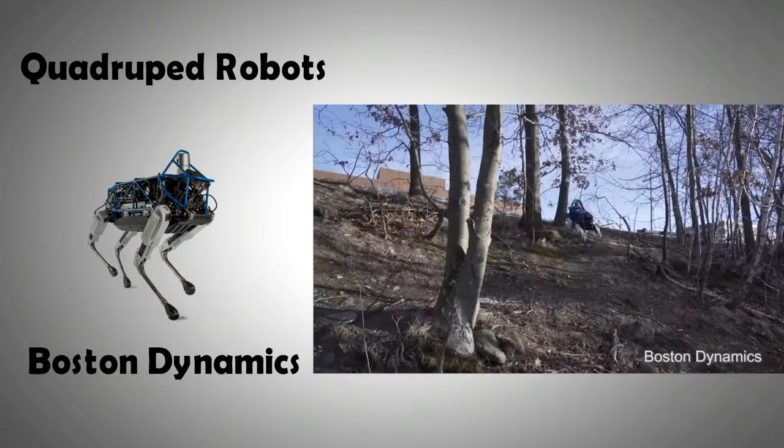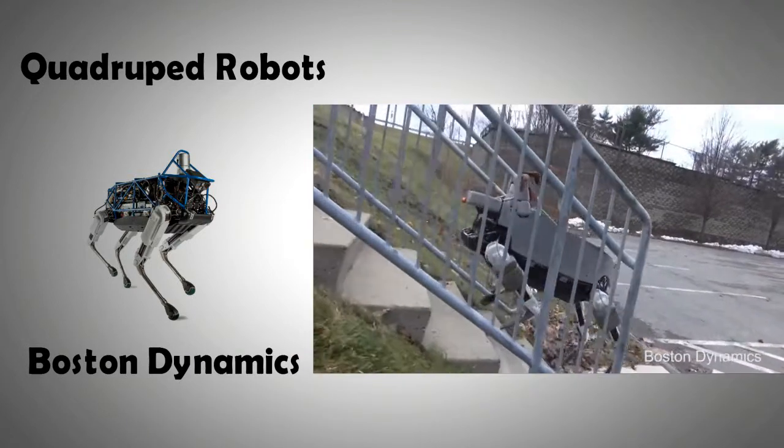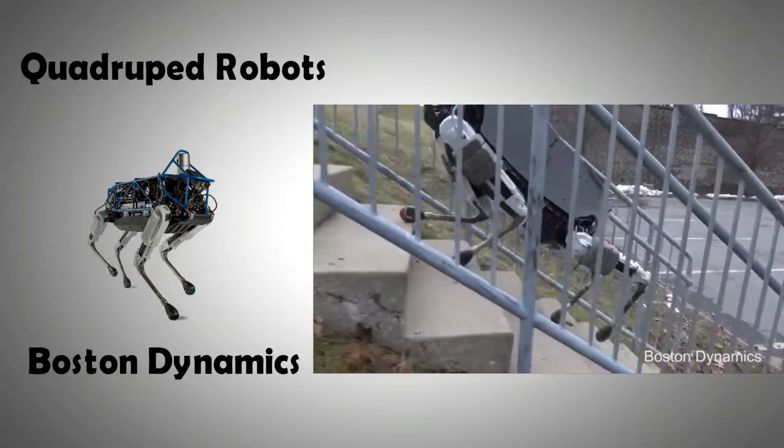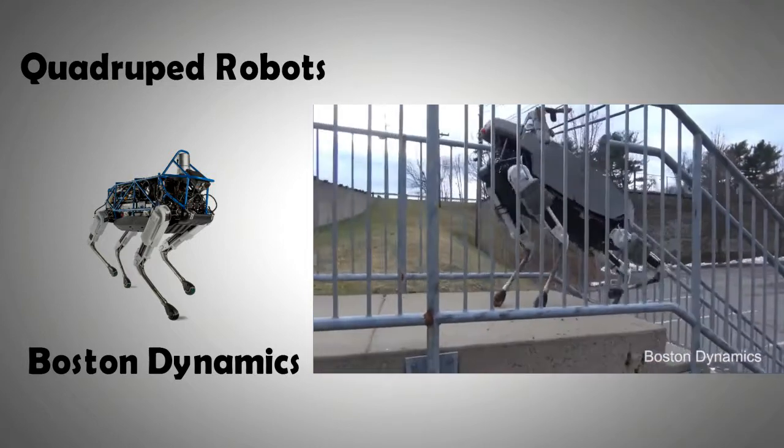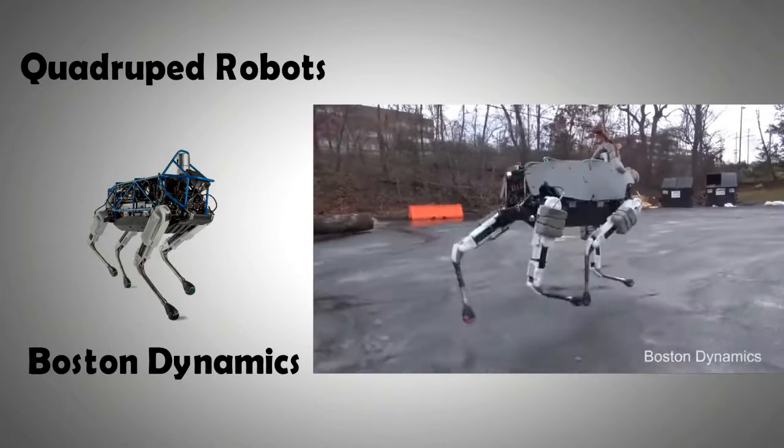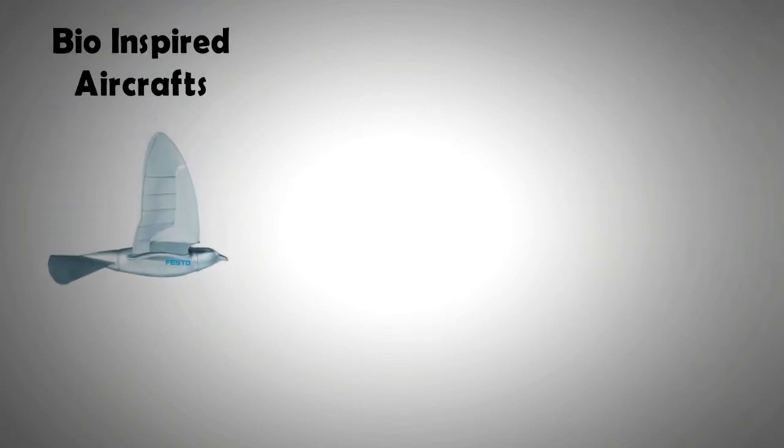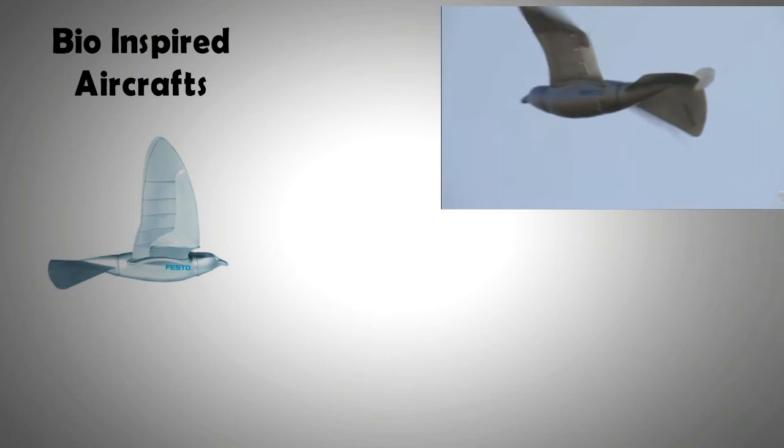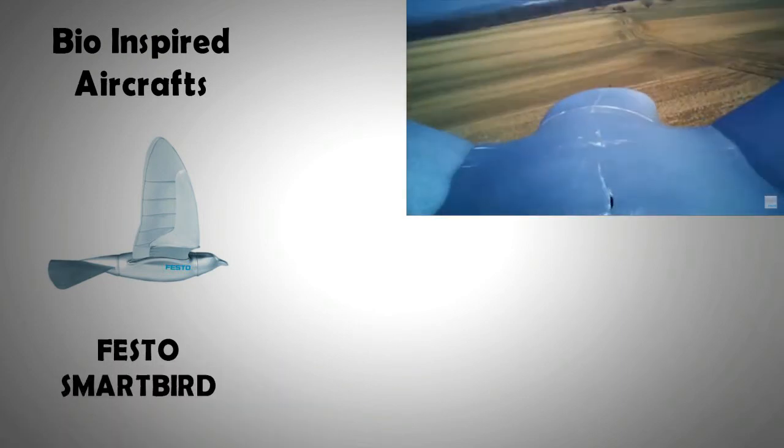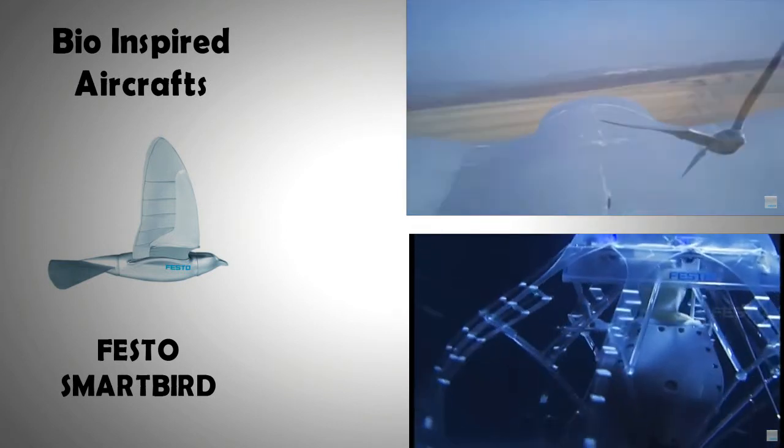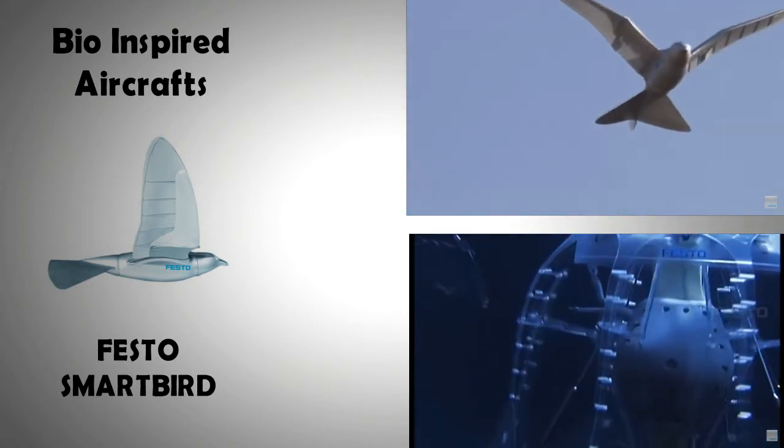Although the military application for these robots cannot be ruled out, they can also be extremely useful for search and rescue operations in a debris-filled environment. Similarly, automated flying machines that fly just like birds are being explored. The world was introduced to Festo SmartBird in 2011. Even jellyfish propulsion mechanism for both an aircraft and an underwater vessel is being researched.